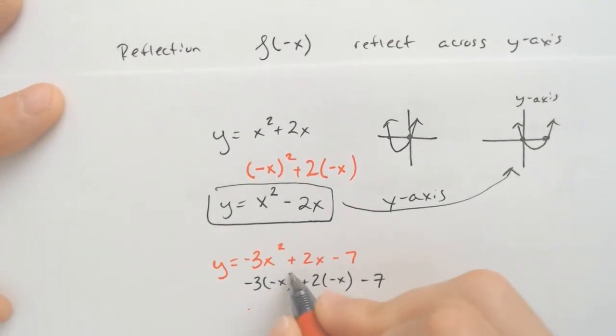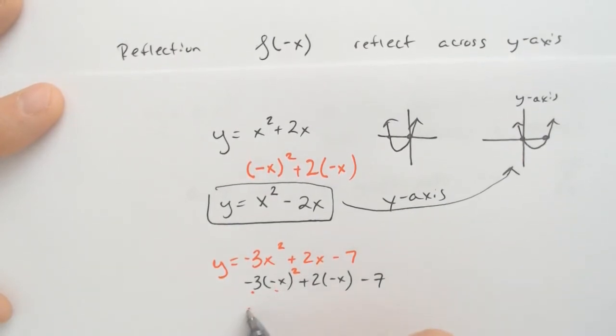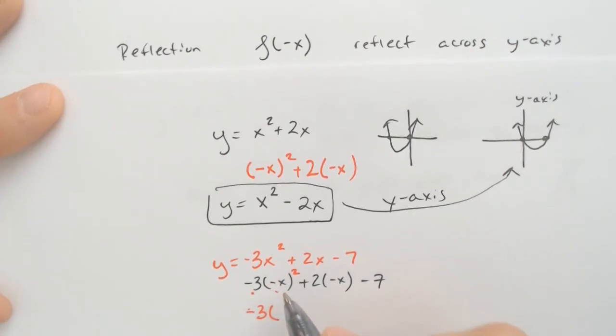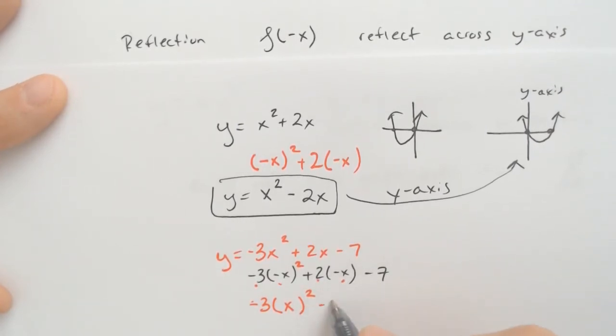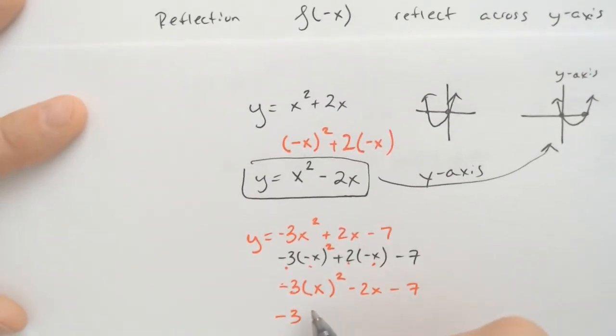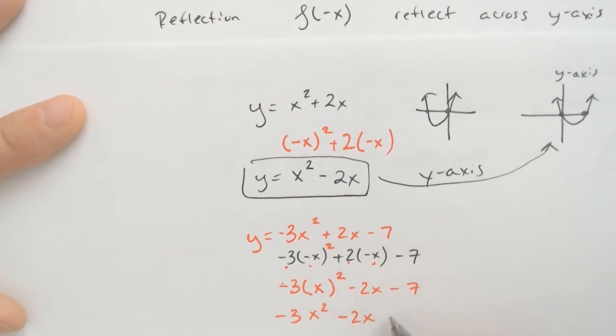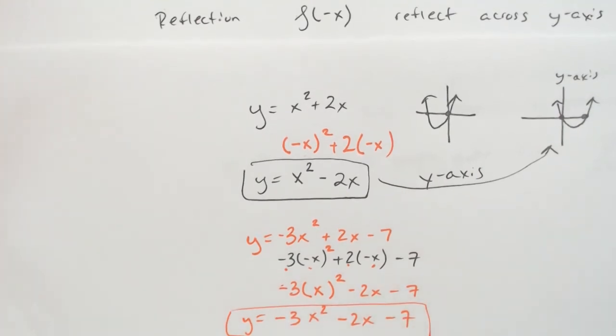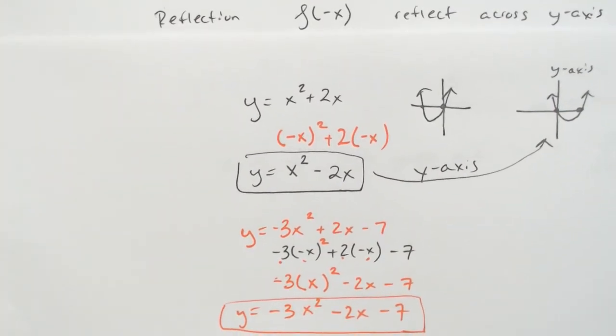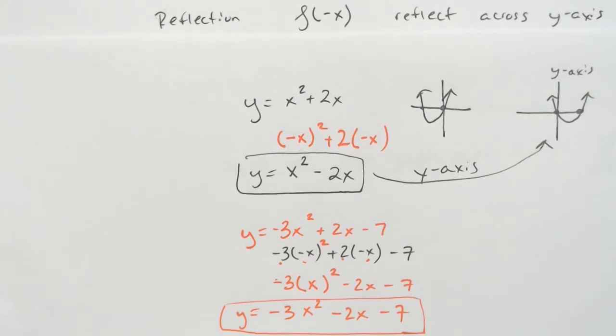So this would be negative 3 times negative x squared. Well, negative 3 is what I would have to do after I do the squaring part. And again, negative 1 times negative 1 is positive 1 x squared. 2 times negative 1 makes negative 2x minus 7. So the official function is negative 3x squared minus 2x minus 7. y equals, there you have it. If you had to graph it, fine. But that's the equation that you would need.